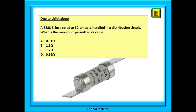Finally, have a think about this one on your own: a BS88-3 fuse rated at 32 amps is installed in a distribution circuit. What is the maximum permitted ZS value? You have four multiple-choice answers, and we will give you the answer in the next 18th edition video, part 4.